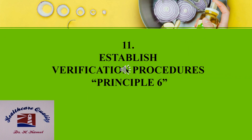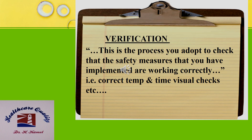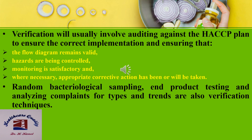Step twelve is to establish verification procedures. This is the process to check that safety measures implemented are working correctly. It usually involves auditing against the HACCP plan to ensure correct implementation, that the flow diagram remains valid, hazards are being controlled, monitoring is satisfactory, and appropriate corrective actions have been or will be taken. Random bacteriological sampling, end product testing, and analyzing complaints for types and trends are also verification techniques.